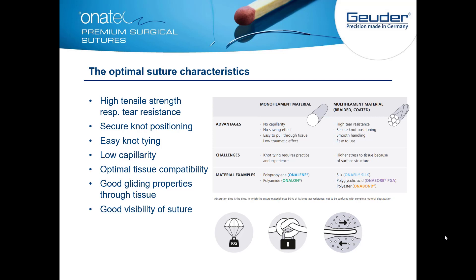When gliding through tissue with such small sutures as seen in the Onatec portfolio, the surgeon needs to be able to see the suture during the whole procedure. That means that a vivid or clearly distinguishable color of the suture is advantageous.